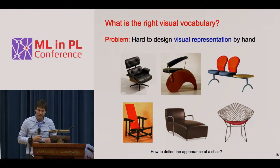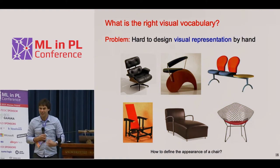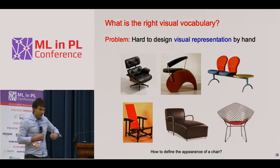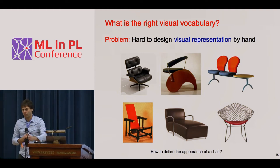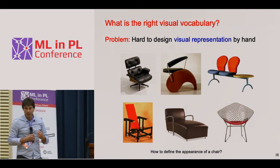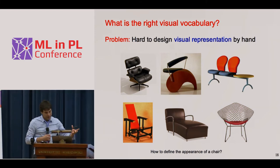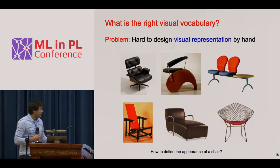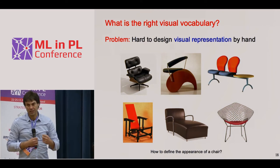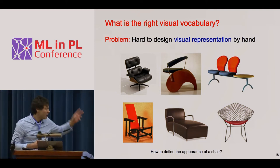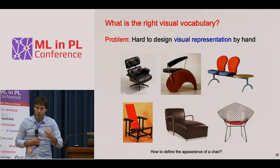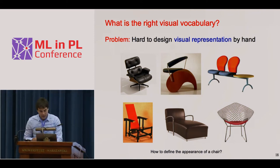The first question is: what is even the right visual vocabulary for what we should recognize? In the example I showed before, it was a supervised problem — someone identified five, ten, or fifty objects to recognize. Defining what an object or action is, is a difficult problem. Initial attempts tried to manually design rules for defining objects, but this quickly turned out to be very difficult. It became apparent that the way to go is learning from data and from examples.